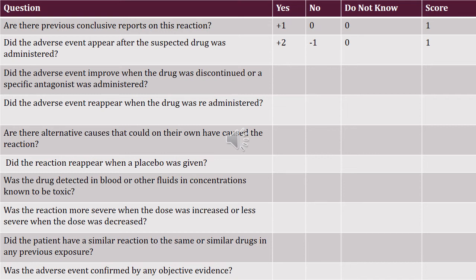Looking at the Naranjo algorithm: the first question is 'Are there previous conclusive reports on this reaction?' If the answer is yes, a score of plus 1 is given. If the answer is no or don't know, a score of 0 is given. The second question is 'Did the adverse event appear after the suspected drug was administered?' If yes, a score of plus 2 is given.